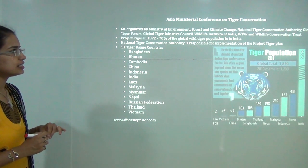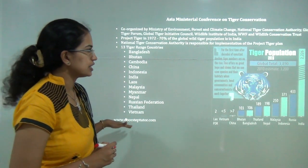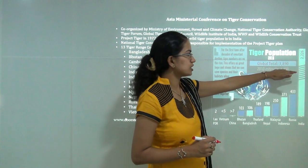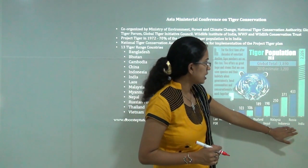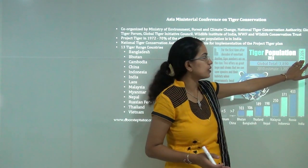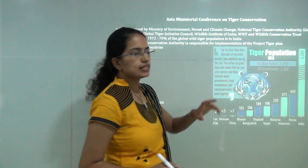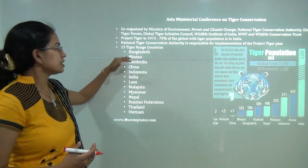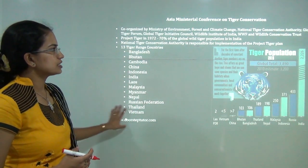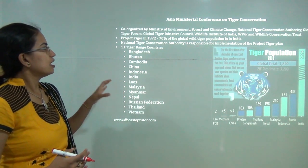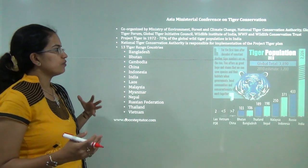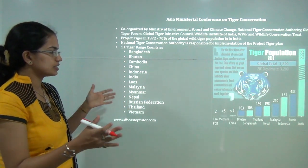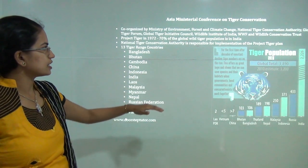The Asia Ministerial Conference on Tiger Conservation was recently held in India. The global tiger population is nearly 3,890 tigers, of which India accounts for the highest number — more than 2,000. India is the only country with both tiger and lion populations simultaneously. There are 13 tiger range countries, mostly in South and Southeast Asia. Project Tiger was started in 1972 with the aim of conserving nearly 70% of the global tiger population that lives in India. This conference was held in Delhi.